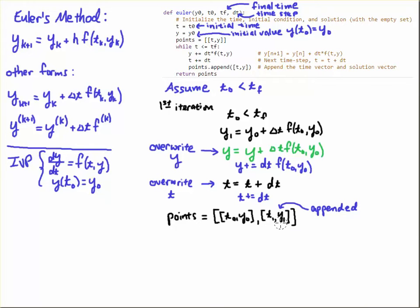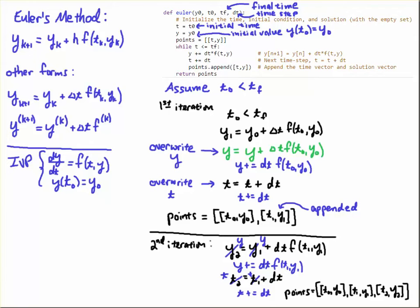The next iteration works a lot the same way: y2 equals y1 plus dt times f evaluated at t1, y1. T2 equals t1 plus dt. You're gonna overwrite that with the y's and t's just like I did here, then write it in compact notation (y plus equals, t plus equals). Then you're going to append the points - this new t is t2, this new y is y2, you append it into the points list (t2, y2). You just keep iterating until the while loop says less than or equal to tf. Once you hit the final time you're done and you'll return this list of points.